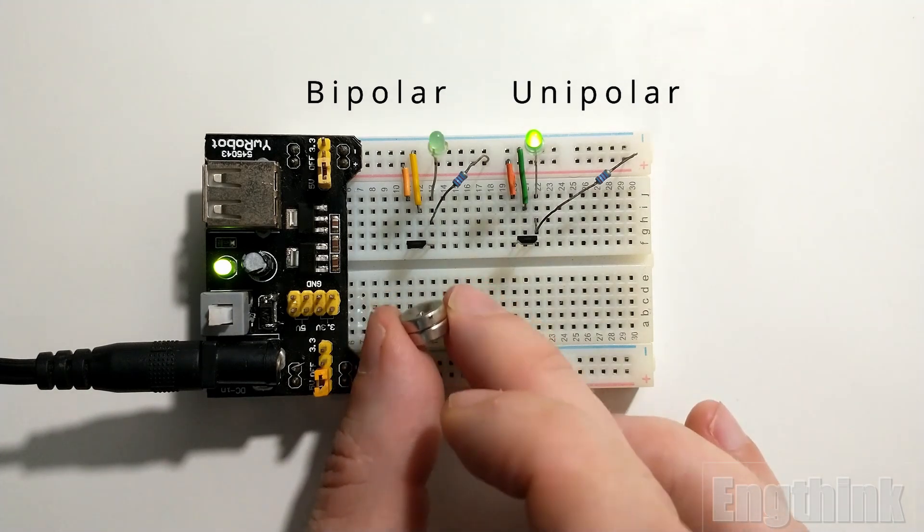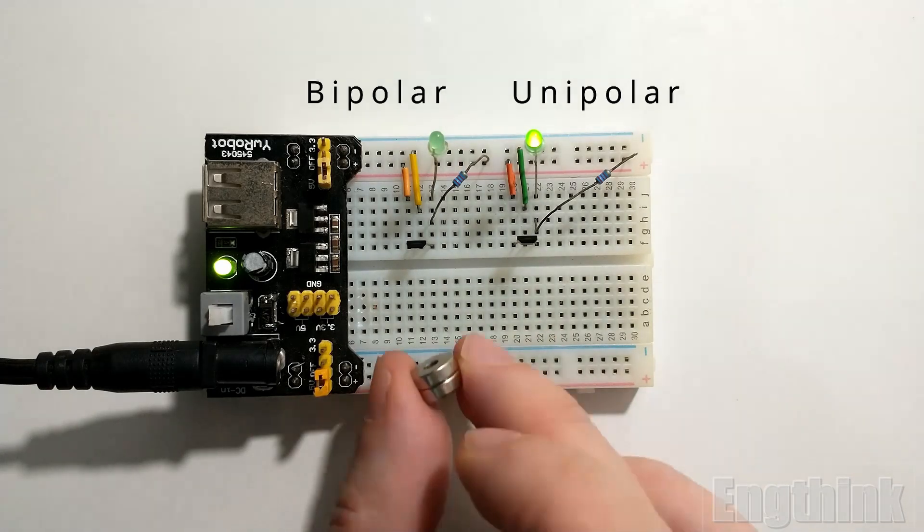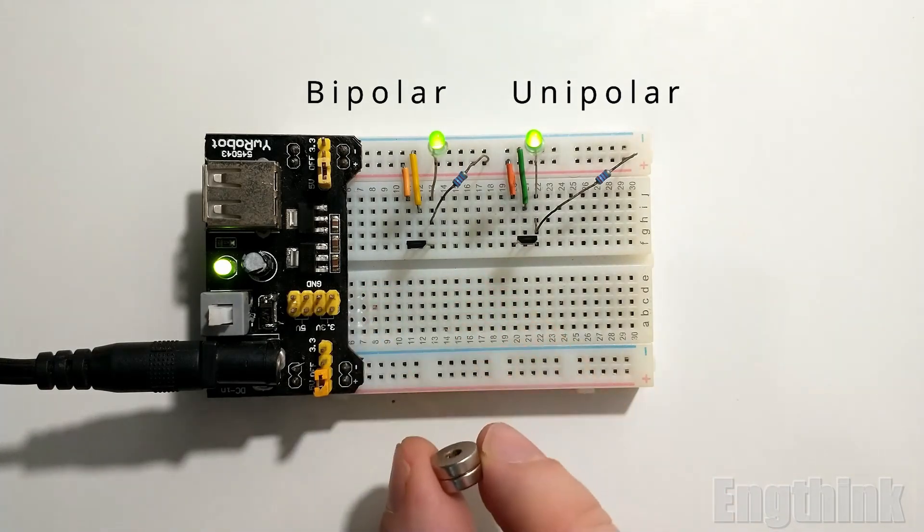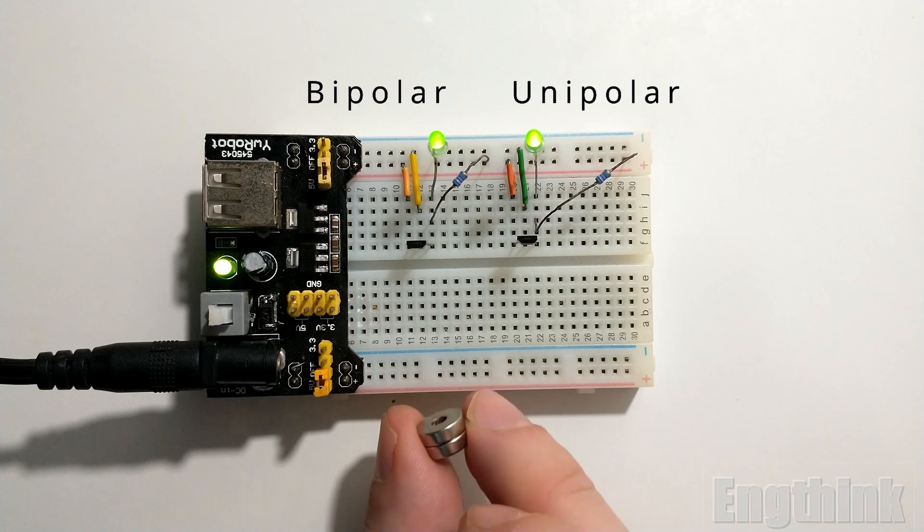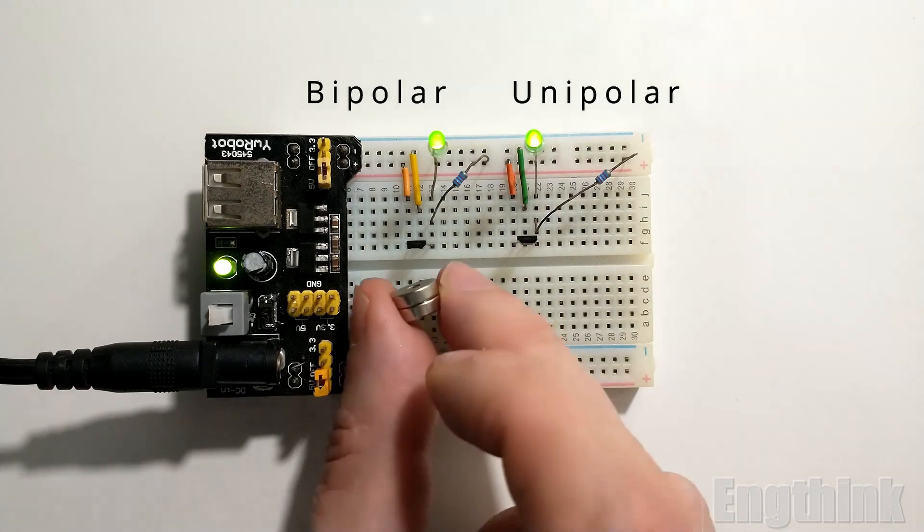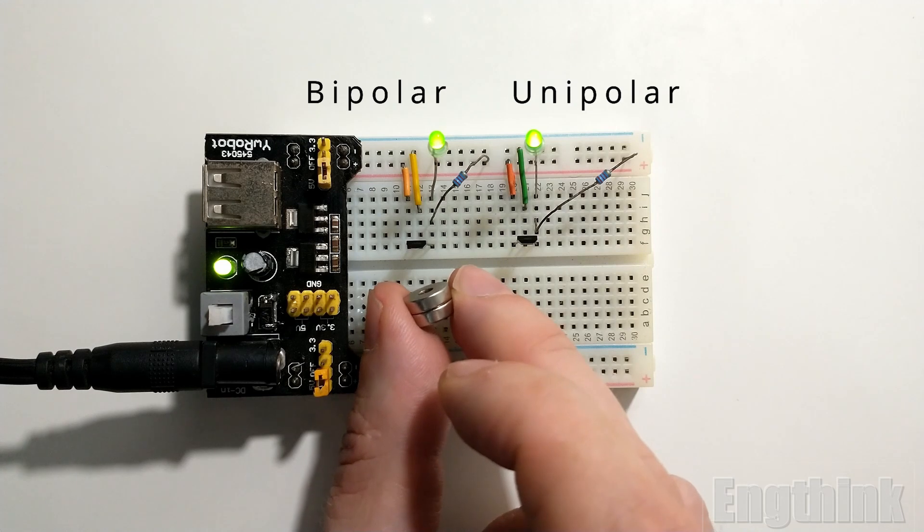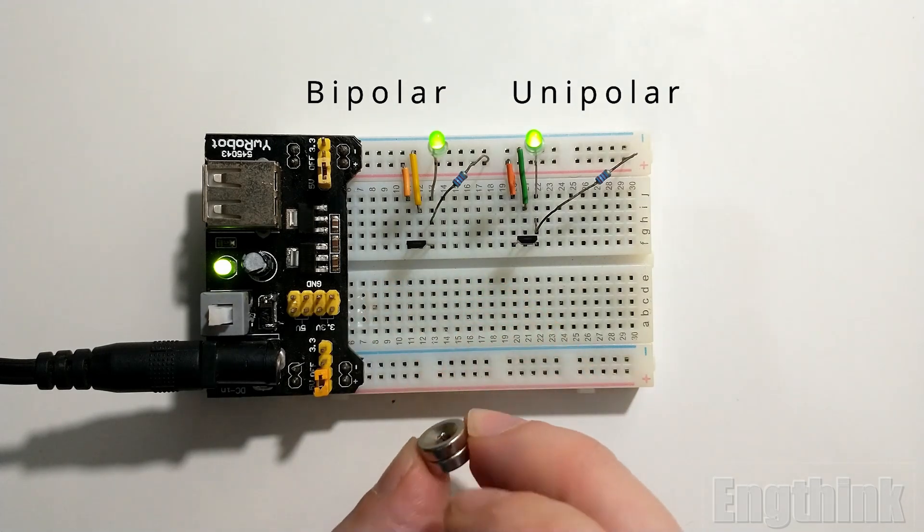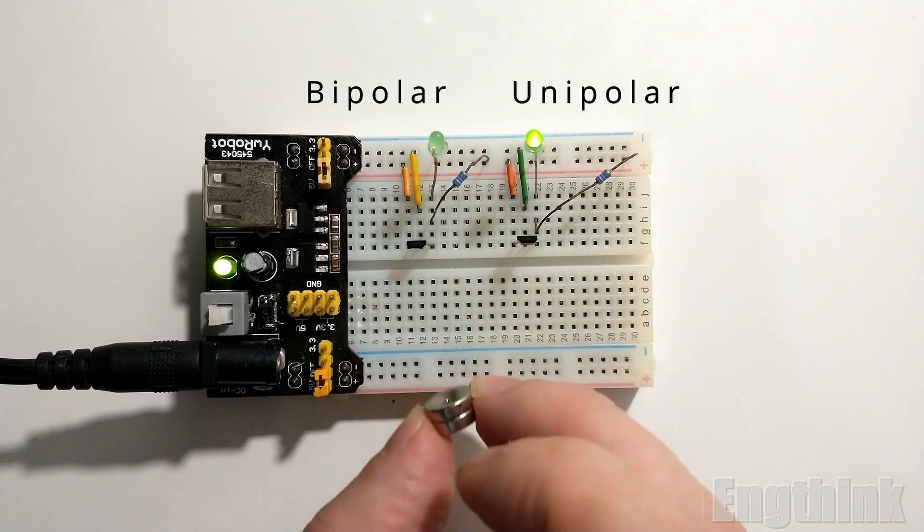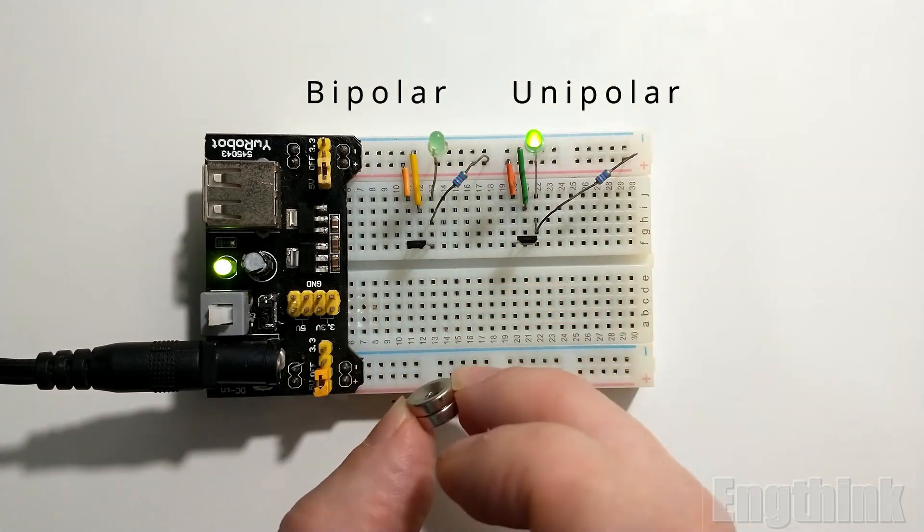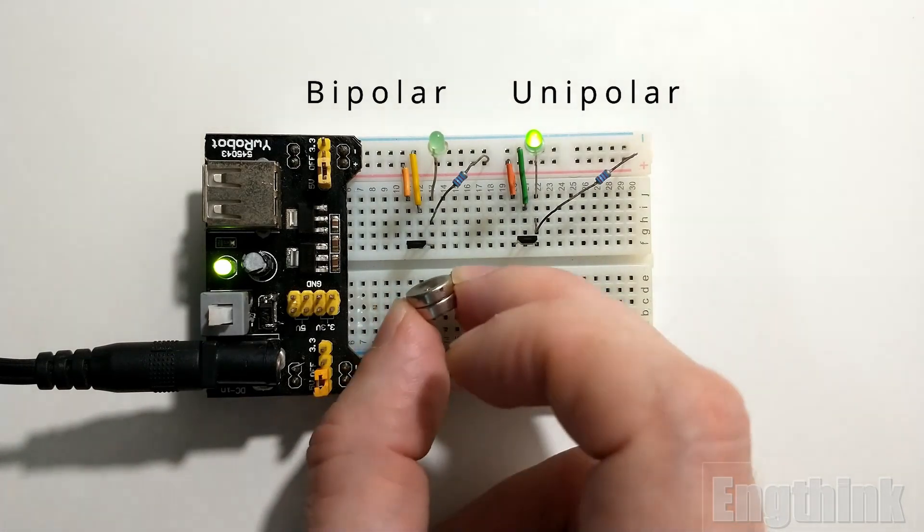The bipolar mode has the latch function in the output and works with both magnetic poles, north and south. However, the unipolar mode only works with the south pole and doesn't have the latch effect in its output.